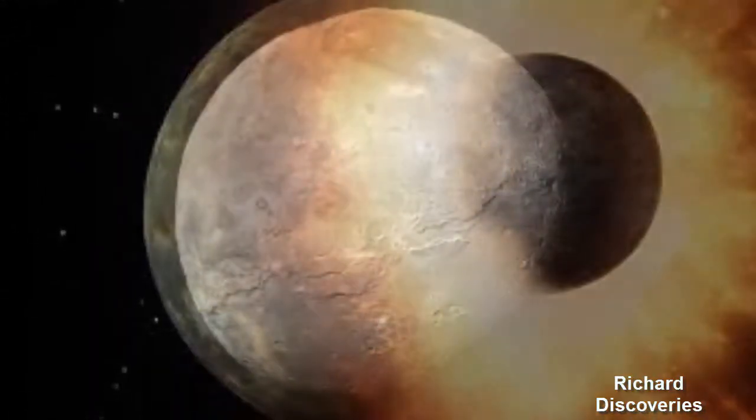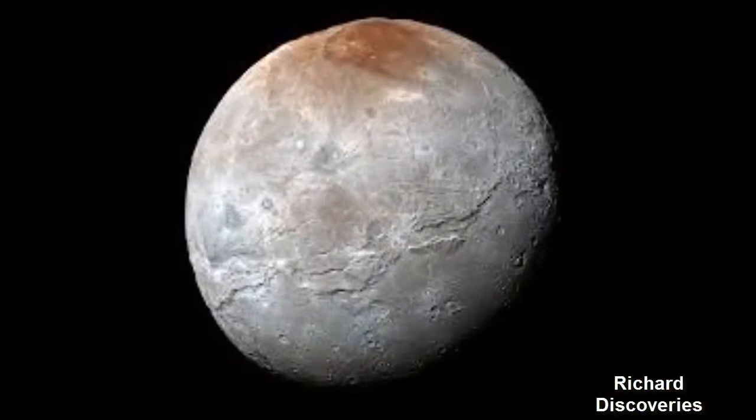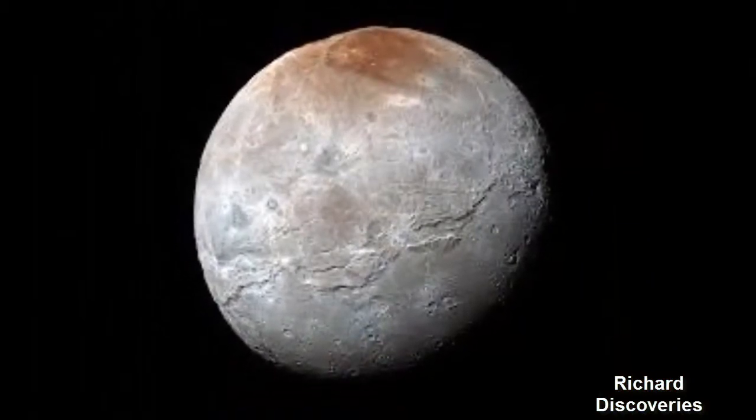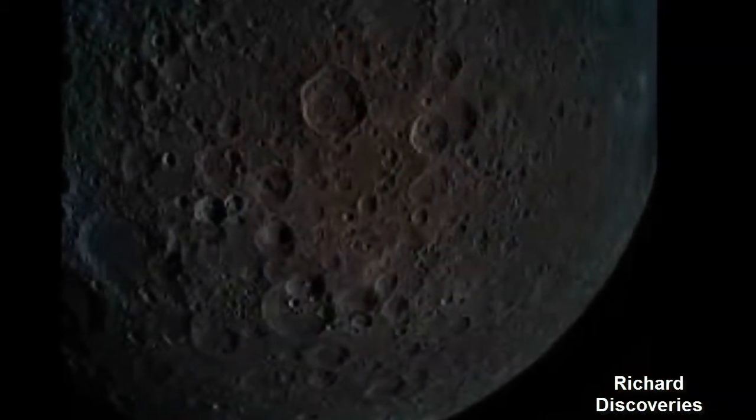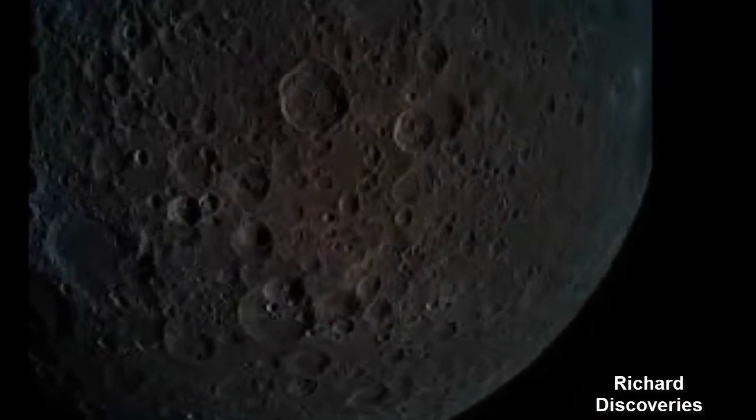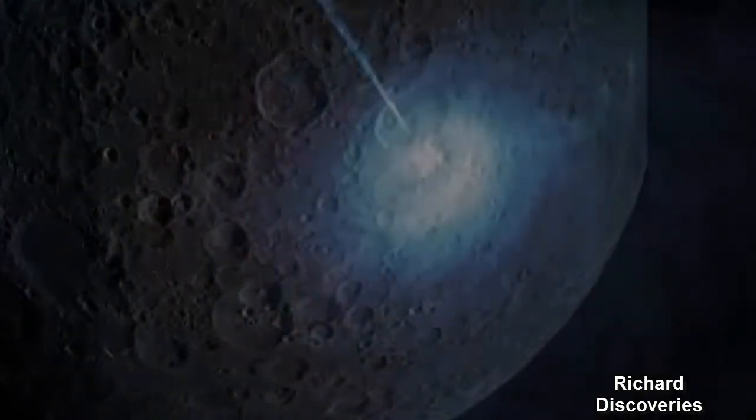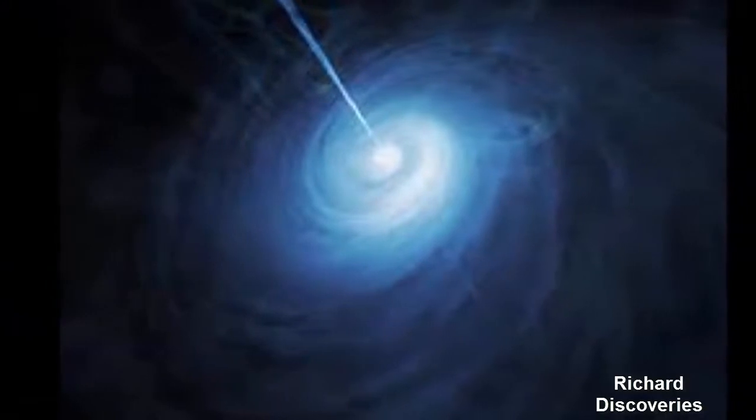Kipping said: "We saw deviations and wobbles in the light curve that caught our attention." The scientists made the initial observations on the Kepler space telescope and used their evidence to secure 40 hours time on the Hubble.